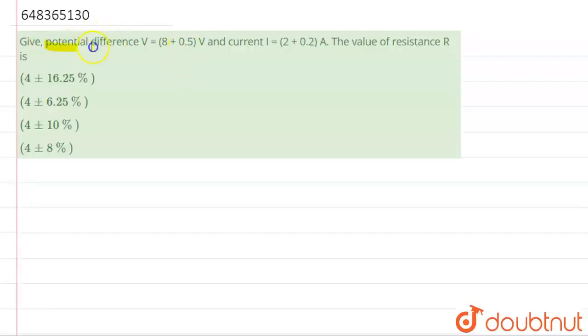The question says that the potential difference V is equal to 8 plus 0.5 volts and current I is equal to 2 plus 0.2 ampere. The value of resistance R is, so over here we are going to follow Ohm's law.